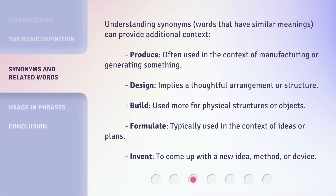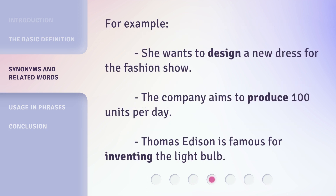Understanding synonyms — words that have similar meanings — can provide additional context. 'Produce' is often used in the context of manufacturing or generating something. 'Design' implies a thoughtful arrangement or structure. 'Build' is used more for physical structures or objects. 'Formulate' is typically used in the context of ideas or plans. For example: she wants to design a new dress for the fashion show; the company aims to produce 100 units per day; Thomas Edison is famous for inventing the light bulb.